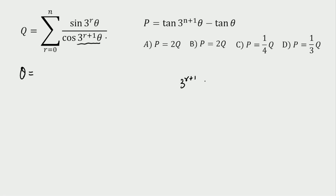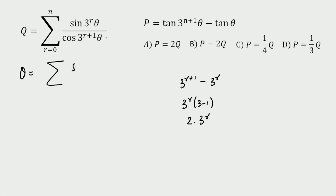Let's say 3^(r+1) is one given angle and 3^r is another. The difference of these two angles: taking 3^r common gives (3 − 1) = 2·3^r. So we write the summation as sine(3^r · θ) / cos(3^(r+1) · θ), then multiply and divide by cos(3^r · θ).